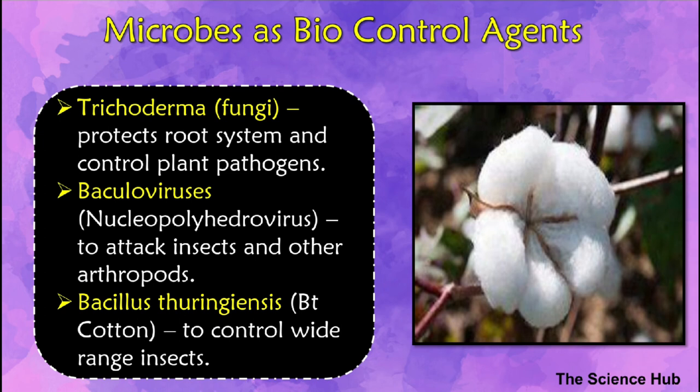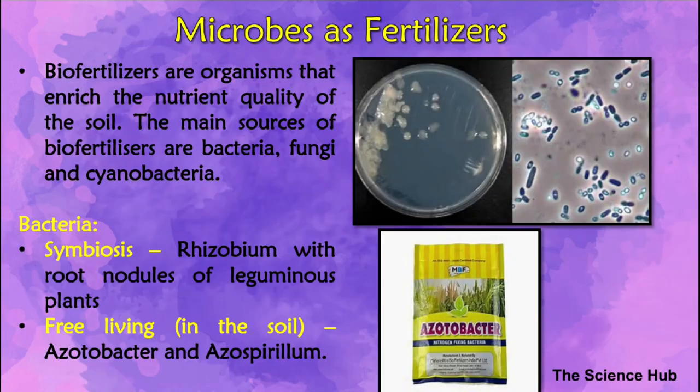Trichoderma are free-living fungi that are very common in root systems and control several plant pathogens. Baculoviruses are pathogens that attack insects and other arthropods. The majority of baculoviruses used as biological control agents are in the genus Nucleopolyhedrovirus. These viruses are excellent candidates for species-specific, narrow-spectrum insecticidal applications.